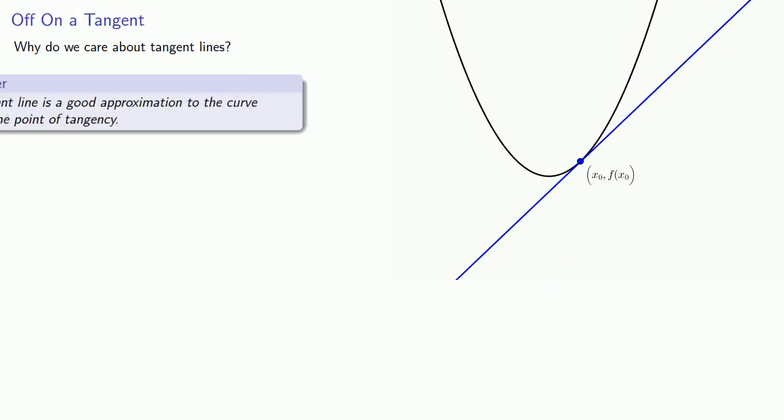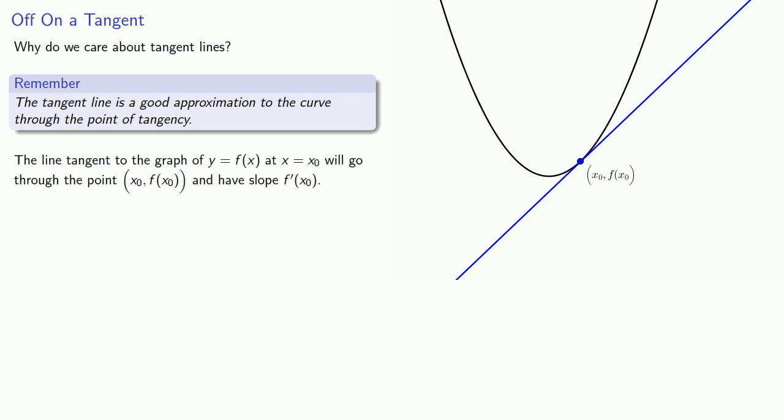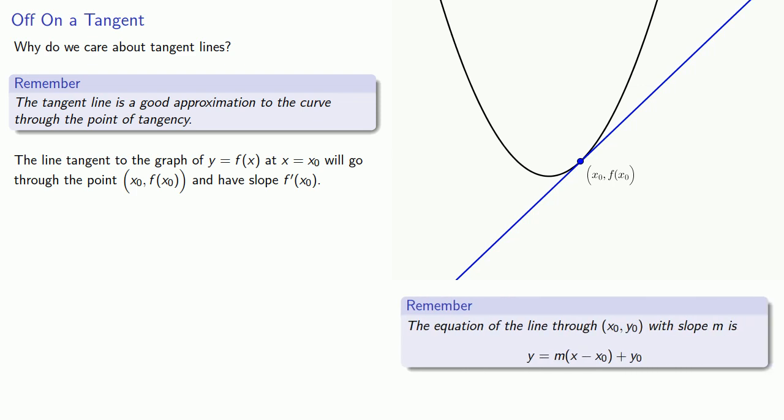And this leads to the following idea. The tangent line is a good approximation to the curve through the point of tangency. Well, that's a geometric idea. Algebraically, it corresponds to the following useful idea. The line tangent to the graph of y equals f of x at x equals x0 will go through the point (x0, f(x0)), and have slope f prime of x0. Since we know how to write the equation of a line given a point and the slope, we can write the equation of the tangent line. But if the tangent line approximates the curve, then the equation of the tangent line will be an approximation for the function itself. Consequently, our function will be approximately equal to the equation of the tangent line as long as our x value is close to x0, our point of tangency.